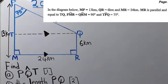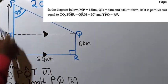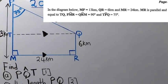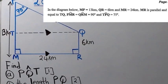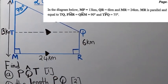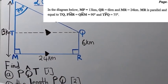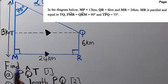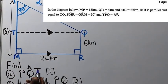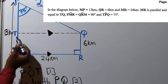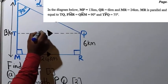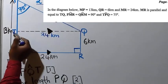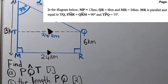The question reads: in the diagram below, MP is 13 kilometers, QR is 60 kilometers, and MR is 24 kilometers. MR is parallel and equal to TQ, which means that TQ is also 24 kilometers. When you look at the shape MRQT, you have a rectangle.